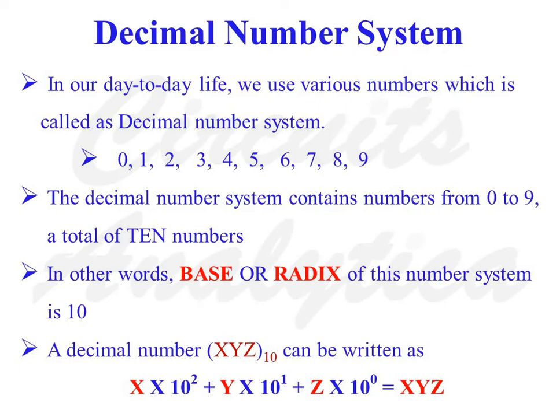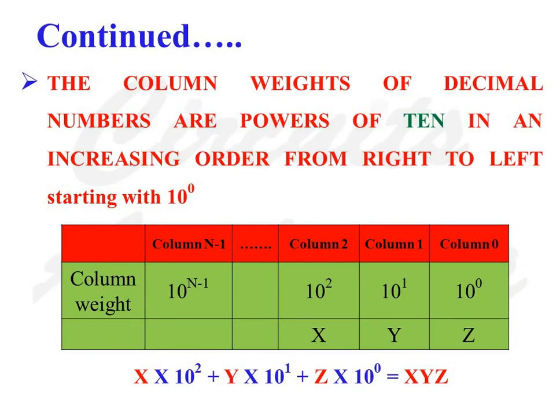In other words, we can say that x is in the hundreds place, y is in the tens place, and z is in the units place. The column weights or column values of decimal numbers are powers of 10 in increasing order from the rightmost digit to the left, starting with 10 raised to 0.